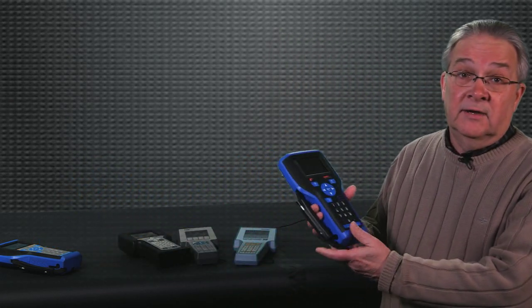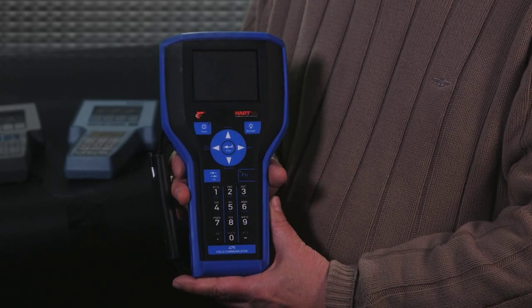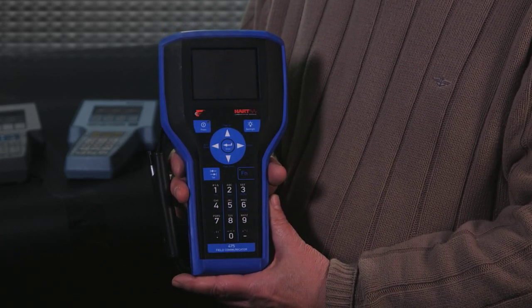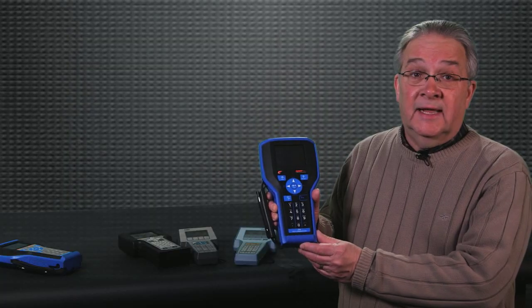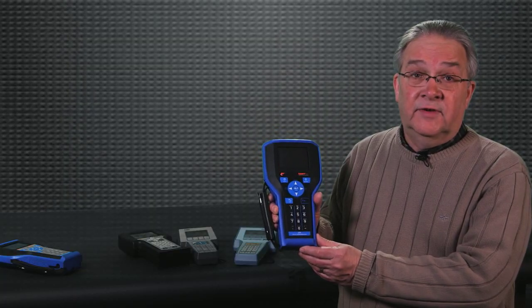In 2009 the 475 field communicator was introduced. This was smaller, faster, had a color screen, had a lithium-ion battery and Bluetooth communication, and it is the standard in the industry today as far as field communicators.